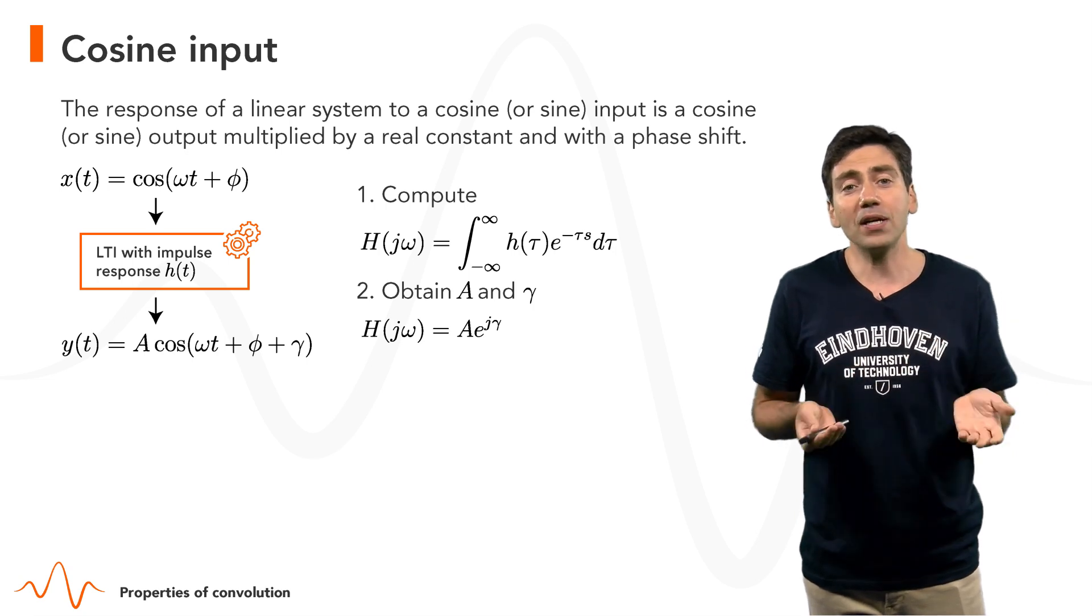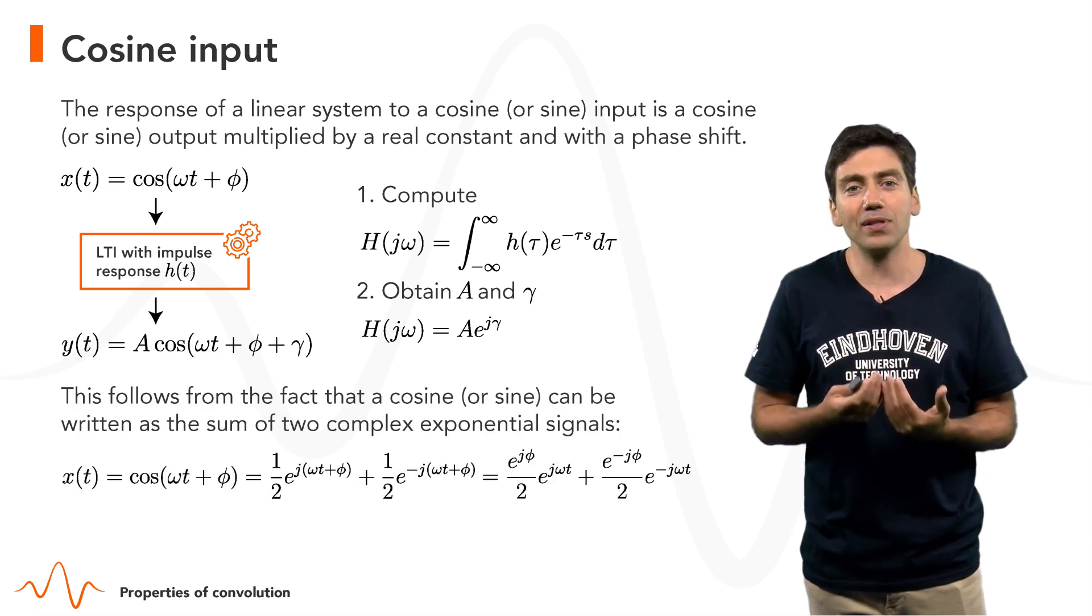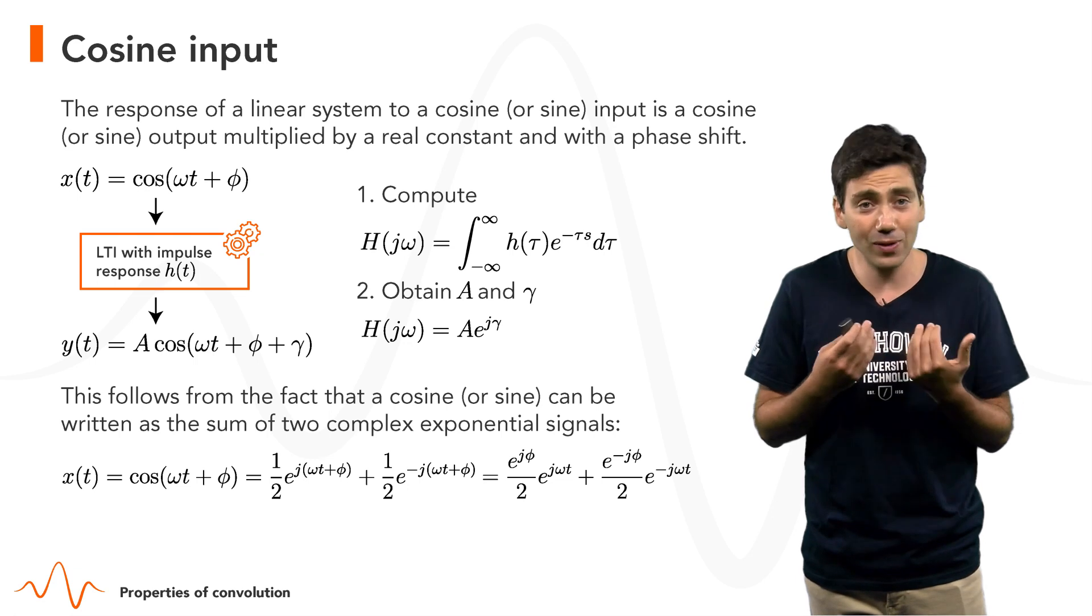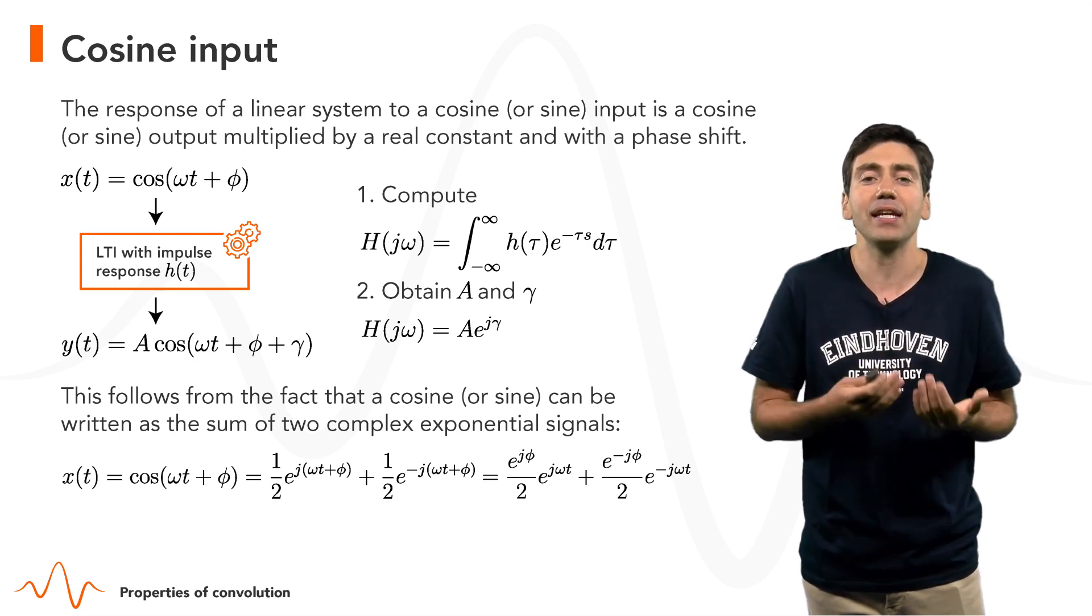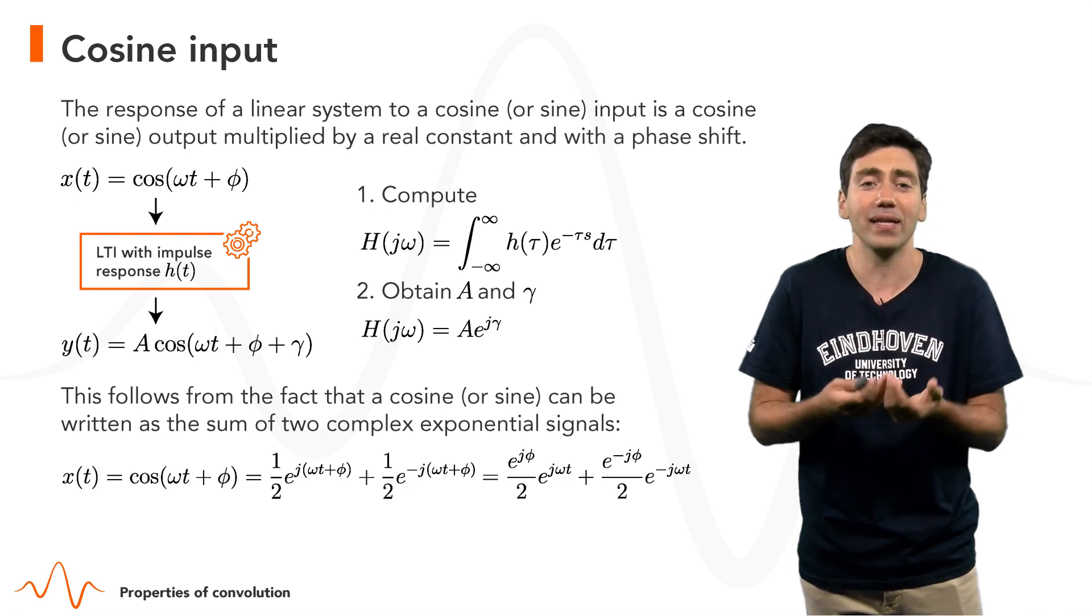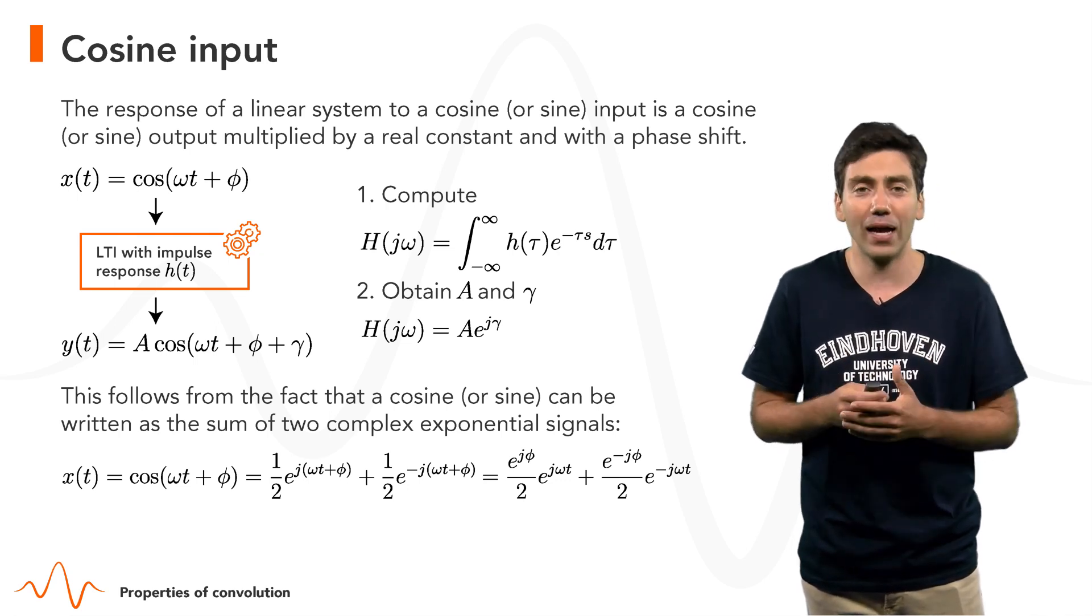Now, the way to conclude this is very similar to the discrete time case and basically follows from the fact that cosines and sines can be written as sums of complex exponentials and therefore I'm not going to do it here.